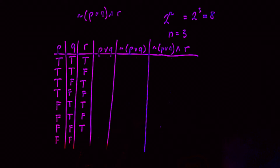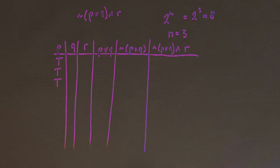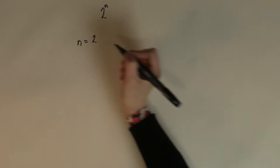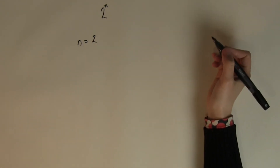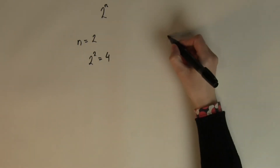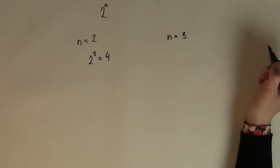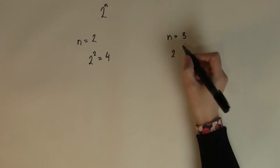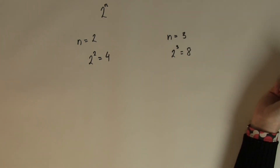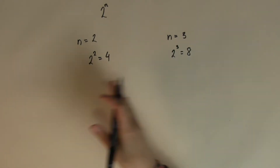Every input can be true or false — zero or one — so that gives you two possible input values. Depending on how many different input values you have, that will be two to a certain power. For example, if I have two different input values, p and q, the possible combinations will be two to the two, which is four. If I have three input values, p, q, and r, the possible combinations will be two to the three, which is eight.